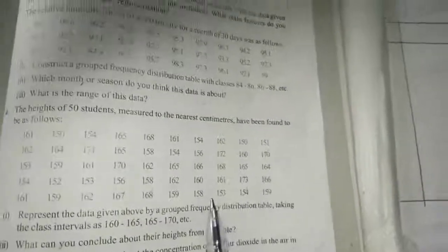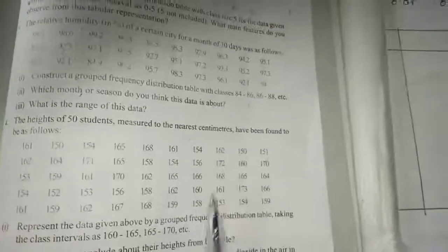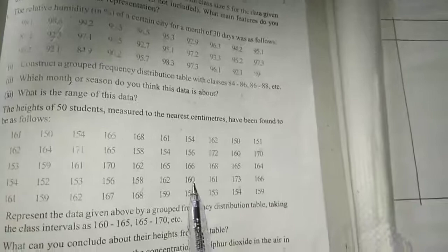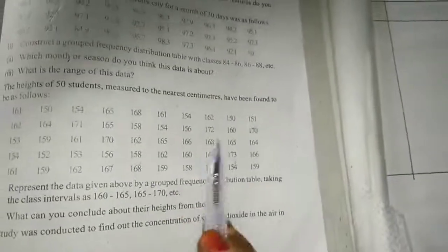Then what can you conclude about their height from the table? Which height is more? This is homework for you. You have to form the frequency distribution table and write the answer for the second question.